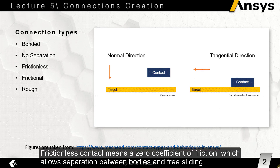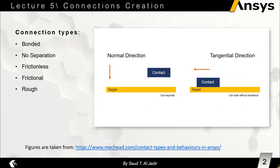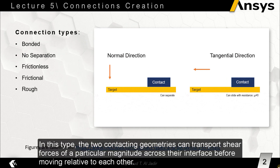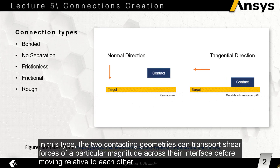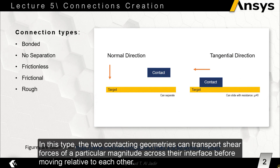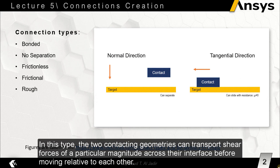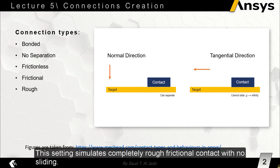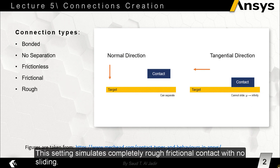Frictionless contact also allows free sliding. Frictional contact means the two contacting geometries can transport shear forces of a particular magnitude across their interface before moving relative to each other. Lastly, rough contact simulates completely rough frictional contact with no sliding.